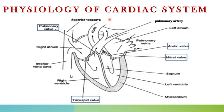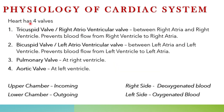The heart has four valves: the tricuspid valve (right atrioventricular valve) between right atrium and right ventricle prevents backflow; the bicuspid or mitral valve (left atrioventricular valve) between left atrium and left ventricle prevents backflow; the pulmonary valve at the right ventricle helps blood flow to the pulmonary artery and then to the lungs; and the aortic valve helps the left ventricle pump pure blood to the aorta and the rest of the body.